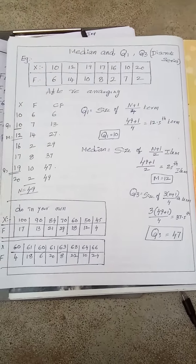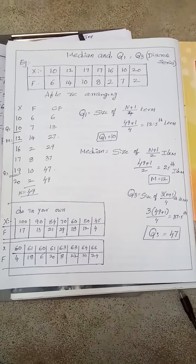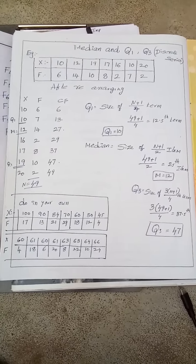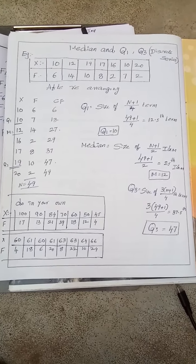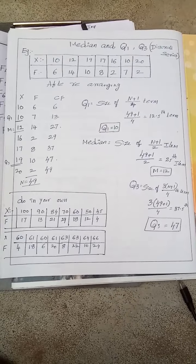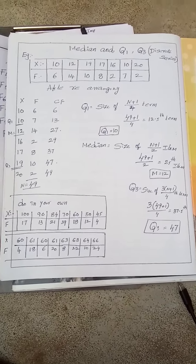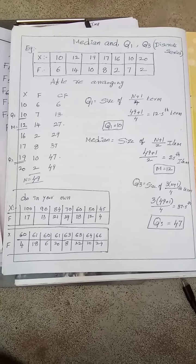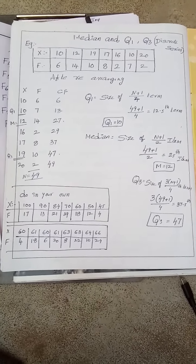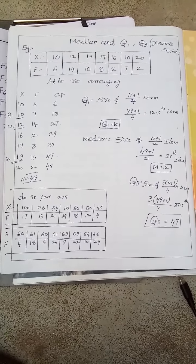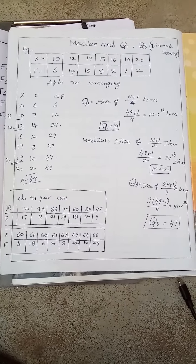My dear students, welcome to my class in business statistics. In the previous class we learned about median and quartiles in case of individual series, and today let us learn about discrete series. The main difference between individual series and discrete series is frequency. In case of individual series there should not be any frequency, but here you will find frequency.